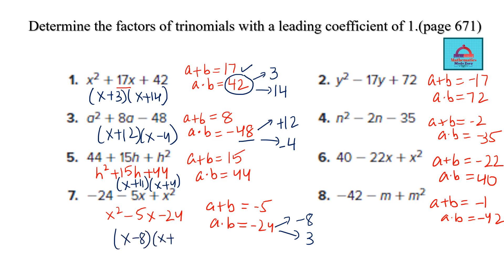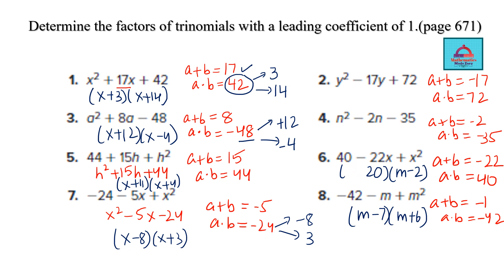For the next expression, (x + 11)(x + 4) works. For the one requiring −8 and 3, the answer is (x − 8)(x + 3). Continuing: (m − 7)(m + 6) for one expression, and for the next, (m − 20)(m − 2), since −20 and −2 add to give the correct middle term and multiply correctly.